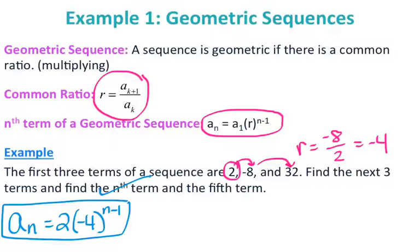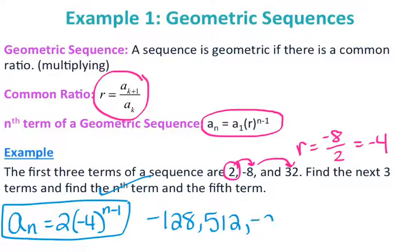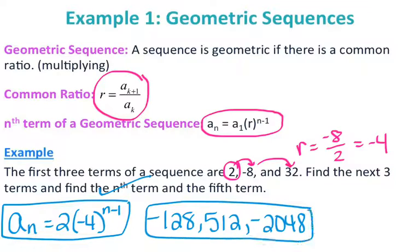I forgot to find the next three terms, so let's go ahead and find those to answer the first question. I take 32 times negative 4, which is negative 128; times negative 4 is 512; times negative 4 is negative 2048. Those represent the next three terms.